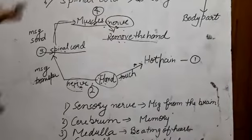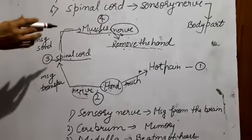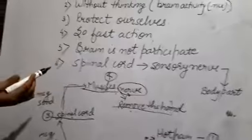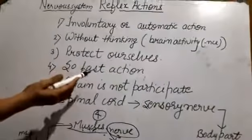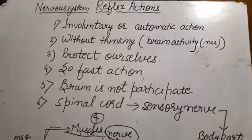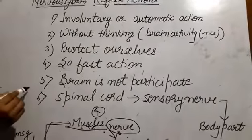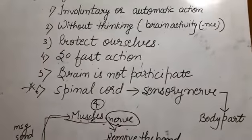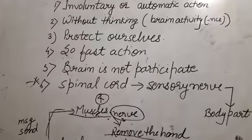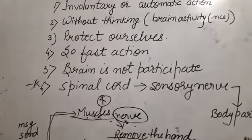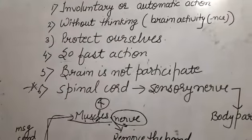To summarize: this is an involuntary action. The brain does not participate. This is a very fast activity. And the important thing is that the spinal cord sends messages through the sensory nerve and motor nerve to the body parts. So today we have learned about reflex action.